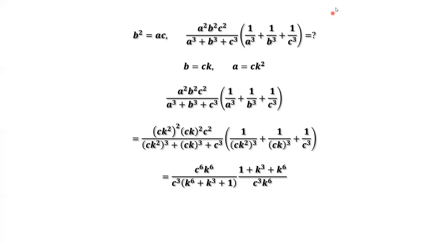Now we can simplify this expression. k to the power of 6 and k to the power of 6 cancel. And c to the power of 6 and c to the power of 3 times c to the power of 3 cancel. Then we have 1 plus k to the power of 3 plus k to the power of 6, which also cancels. So we cancel both the numerator and denominator out. Therefore, we have the final result, which is 1.